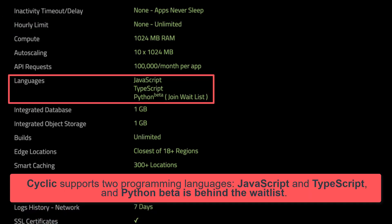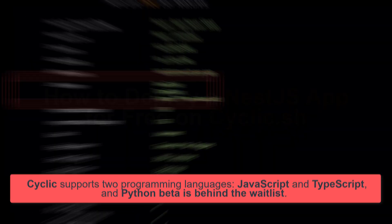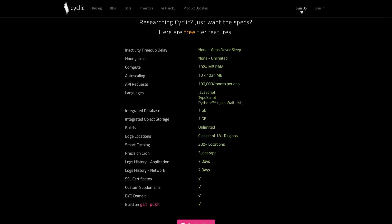As of now, Cyclic supports two programming languages: JavaScript and TypeScript, and Python Beta is behind the waitlist. Now let's get started with our deployment.